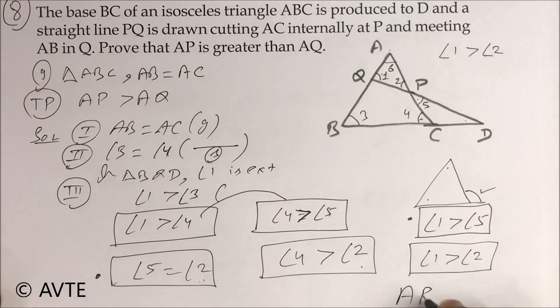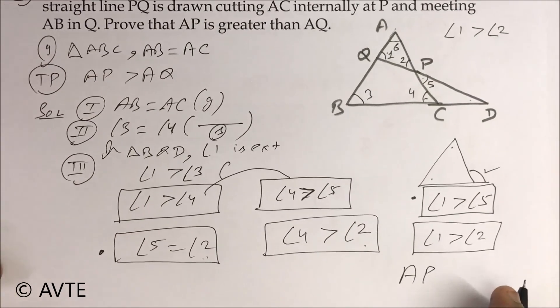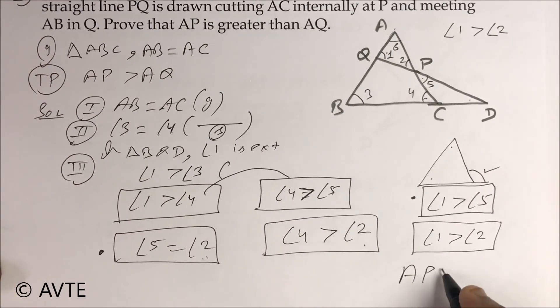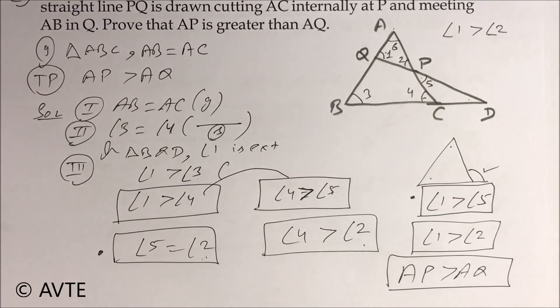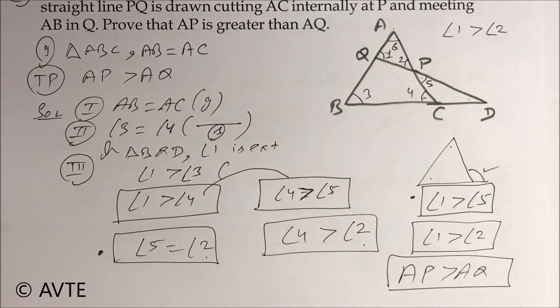Therefore AP is greater than AQ, because the side opposite to the larger angle is greater. I hope you understood this question — keep watching our channel ABTE.